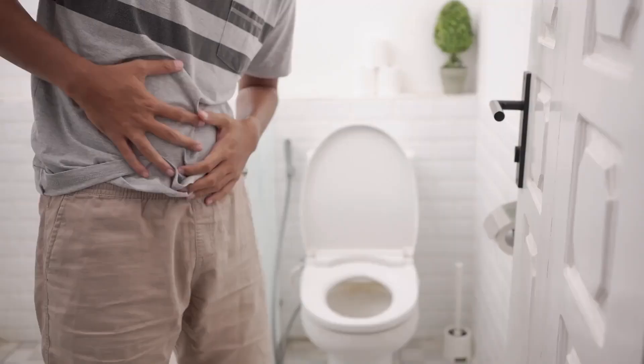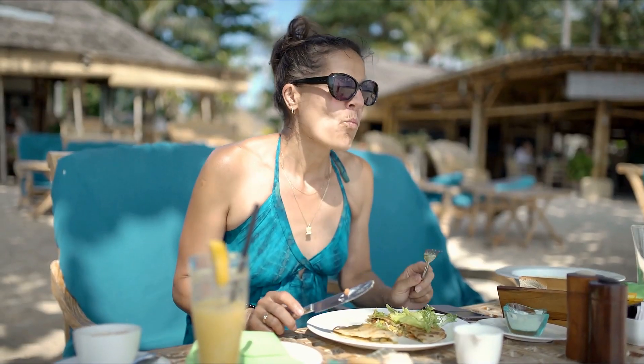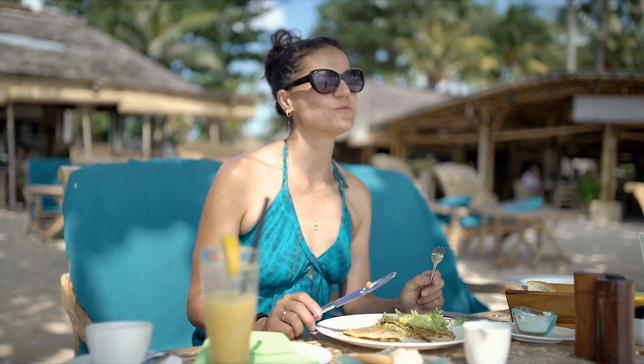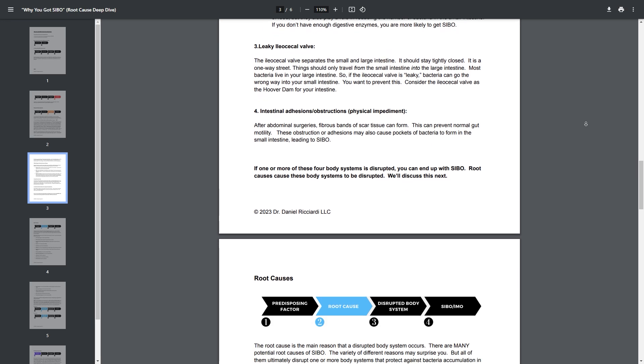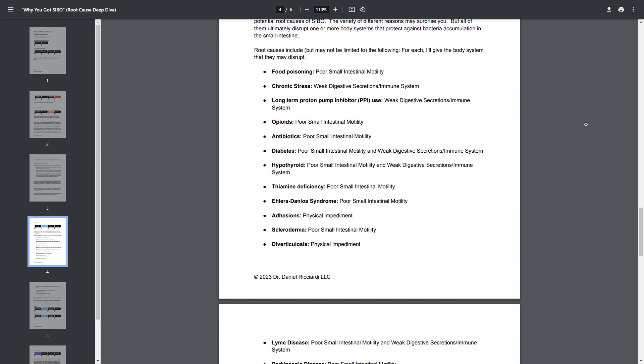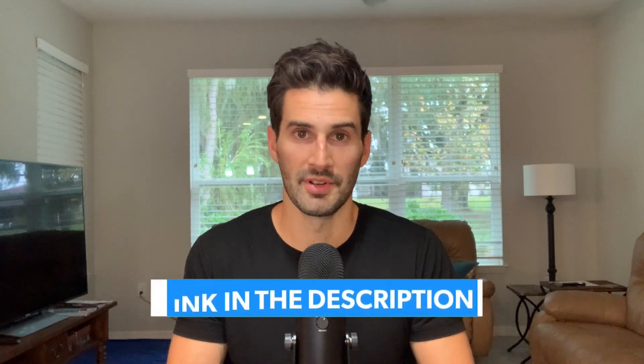And speaking of treatment, if you're ready to get rid of that bloating, constipation, and digestive symptoms of intestinal methanogen overgrowth once and for all — so you can get back to eating that healthy diet you used to eat without fear of discomfort — you need to check out SIBO Shortcut. It's an online program backed by science to help you get rid of SIBO and IMO and prevent it from coming back. Visit the first link in the description below for more info.